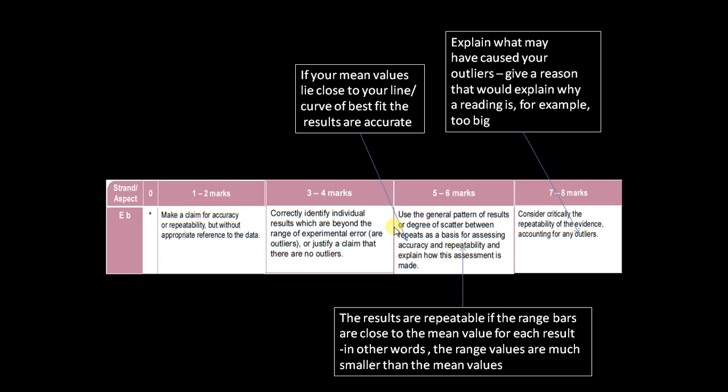Finally, let's look at the highest marks we can score for this strand EB. We've now recognized our outliers, so to score seven or eight marks we've now got to explain what caused the outliers. So we actually need to give a reason, and simply saying the experiment was inaccurate again isn't going to score any credit whatsoever. When you give your reason you've got to give a reason which explains why the outlier, let's say, is too big. If it's too big, your reason has got to explain why it's too big. Similarly, if your outlier is too small, then you've got to come up with a reason which can explain why it's too small.